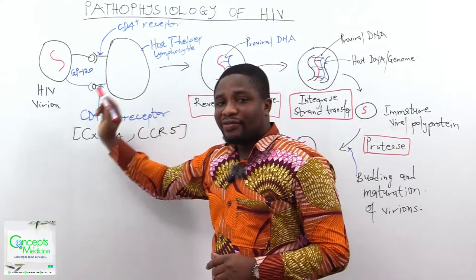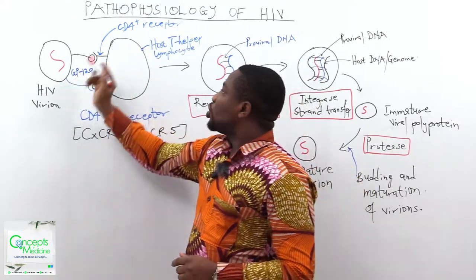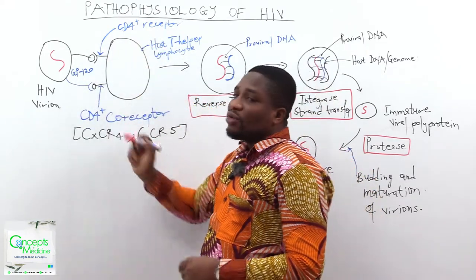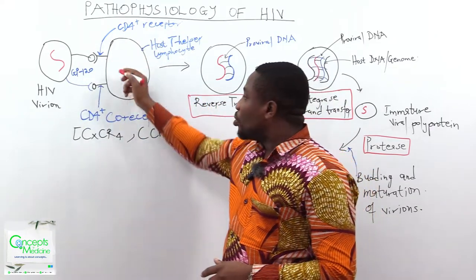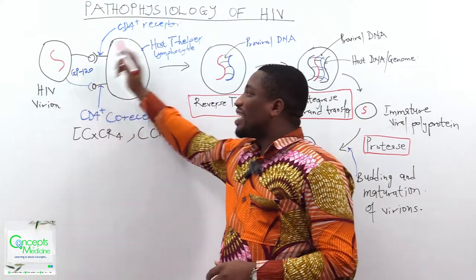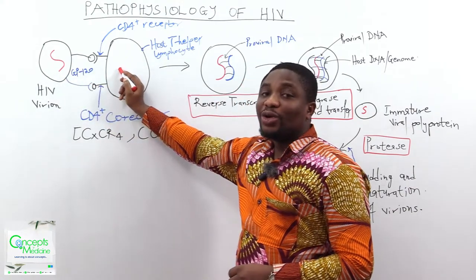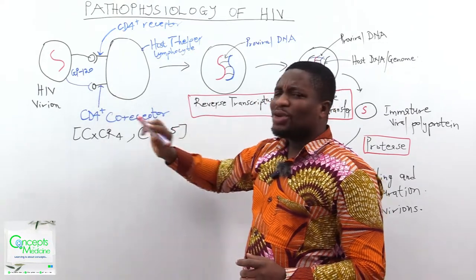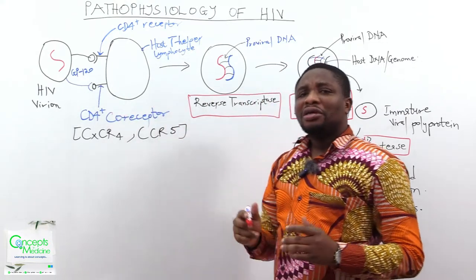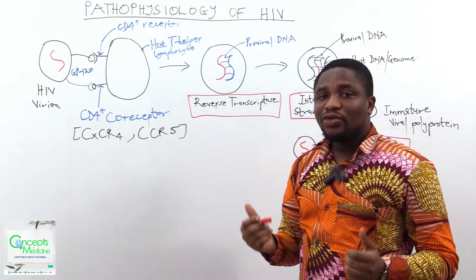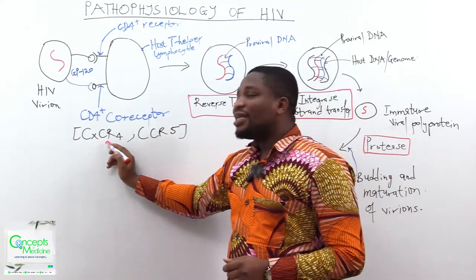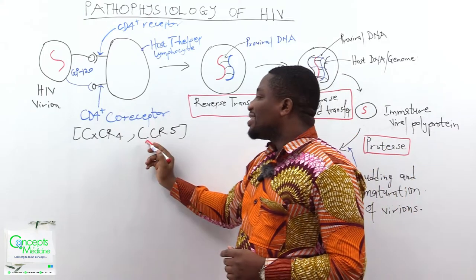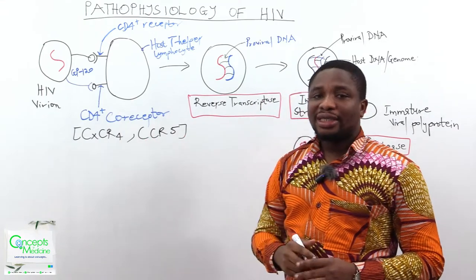The virion needs to bind to both the CD4 receptor and the CD4 coreceptor on the host cell before it can be allowed entry. The other question is, what are these CD4 coreceptors? They come in two forms: we have CXCR4 as a coreceptor, and we have CCR5 as a coreceptor.